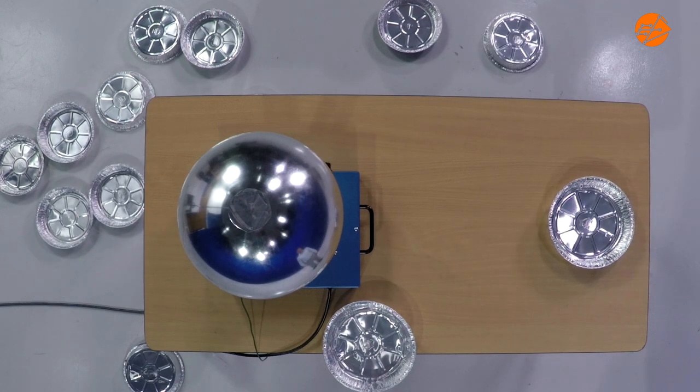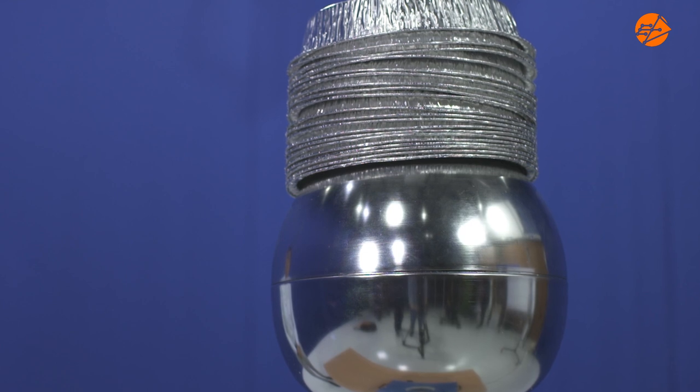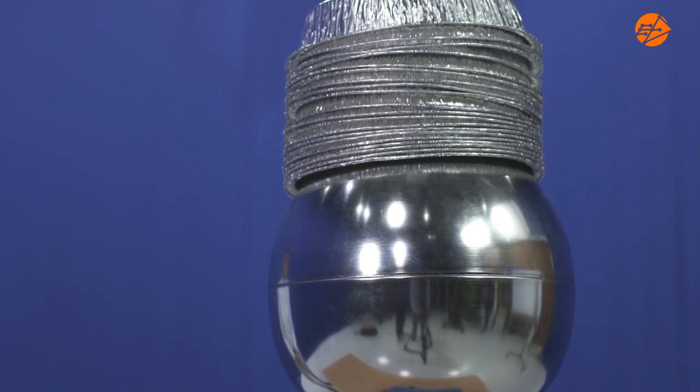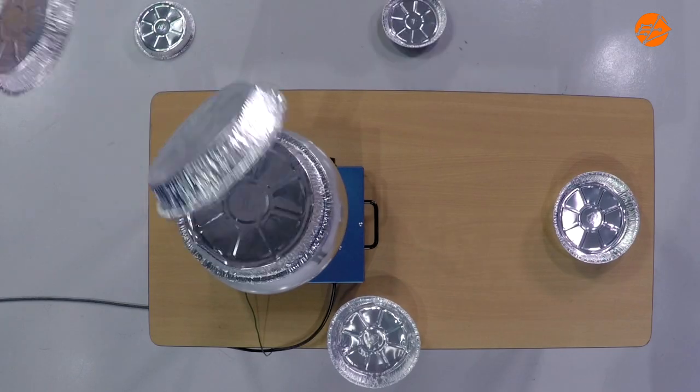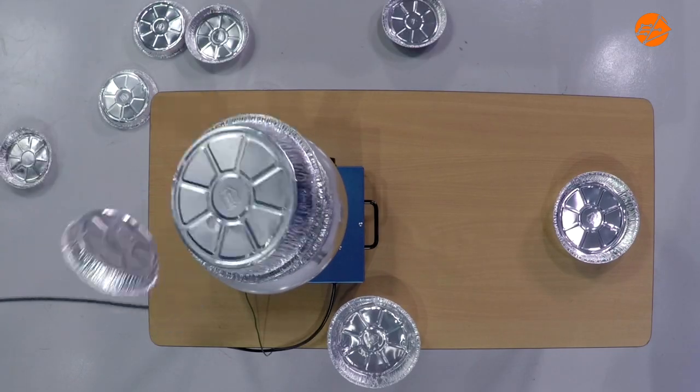In the real world, the pie plates and the dome are not perfectly symmetrical. This means that the force of repulsion will be uneven at different points. Thus, the plates are pushed off in random directions.